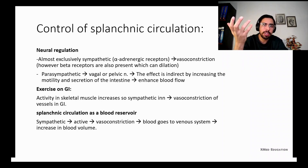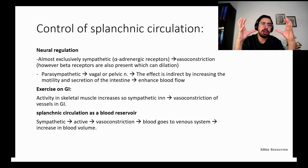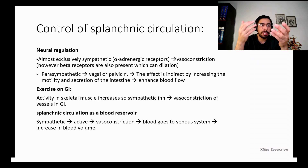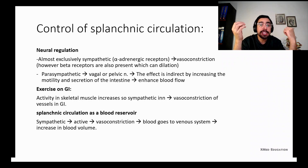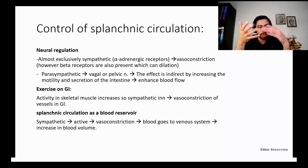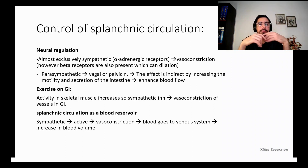Another factor controlling splanchnic circulation is neural regulation. When the parasympathetic nervous system acts on the digestive system, it causes vasodilation. When the sympathetic nervous system acts on splanchnic circulation, it acts on alpha-1 receptors and causes vasoconstriction, reducing blood flow to the GI tract. When we eat, the parasympathetic nervous system is activated via the vagal nerve or pelvic nerve, indirectly increasing blood flow by increasing motility and secretion.